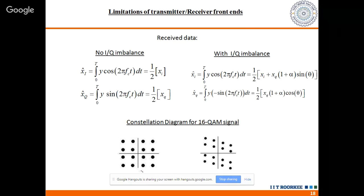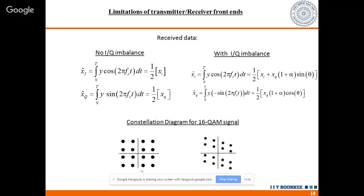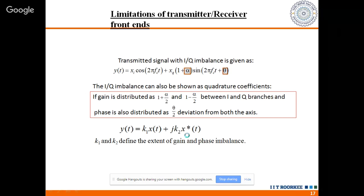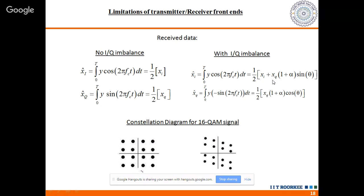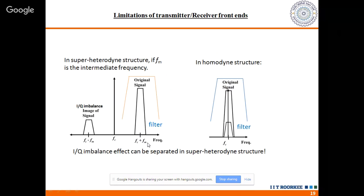Due to IQ imbalance, the output in the time domain becomes y(t) = k1·x(t) + k2·x*(t), where x* is the conjugate. If k2 = 0 and k1 = 1, then y(t) = x(t) as desired. The conjugate term represents the phase imbalance. Since the conjugate of e^(j2πF_IF·t) is e^(-j2πF_IF·t), the image falls on the negative frequency side near zero — or when upconverted, it appears at the negative side of the carrier frequency. In the constellation diagram and frequency plot, the image at F_c - F_IF appears with smaller magnitude than the original signal.